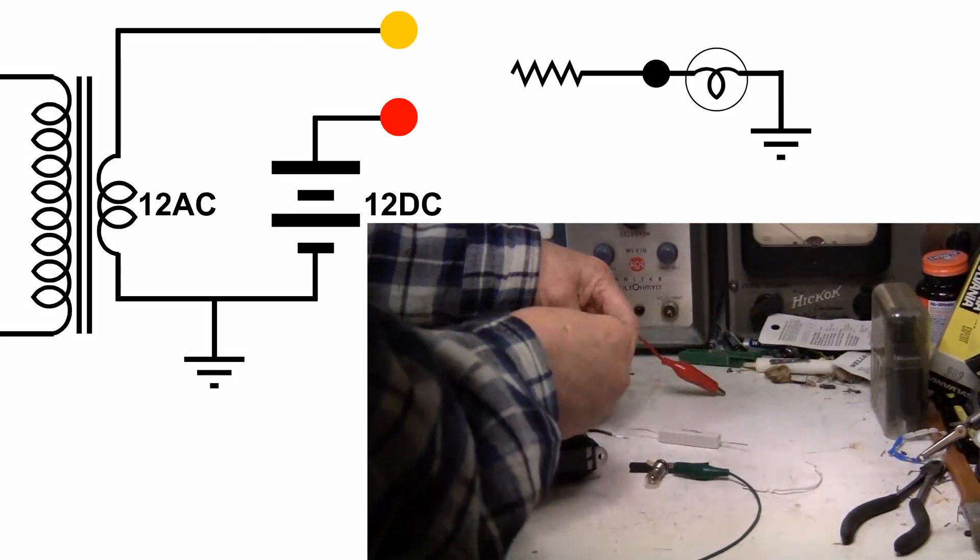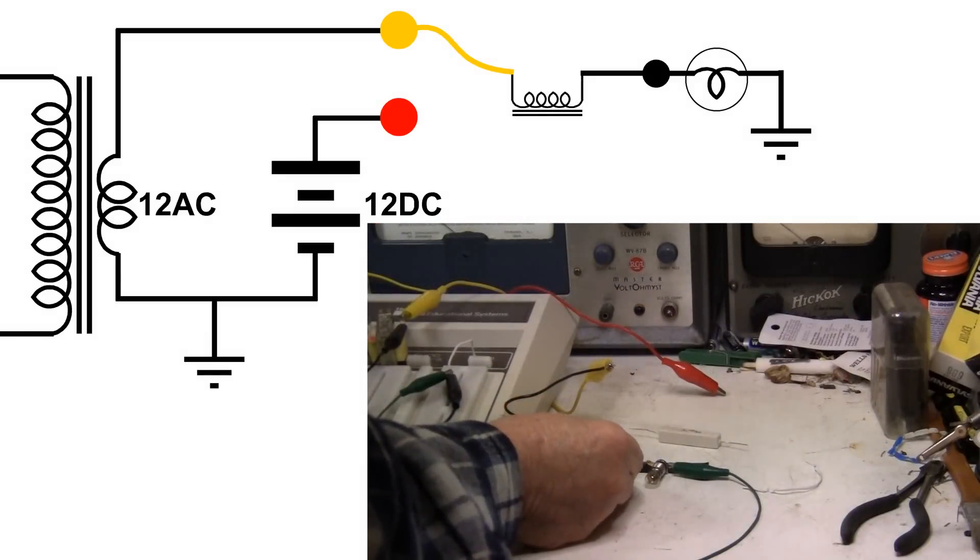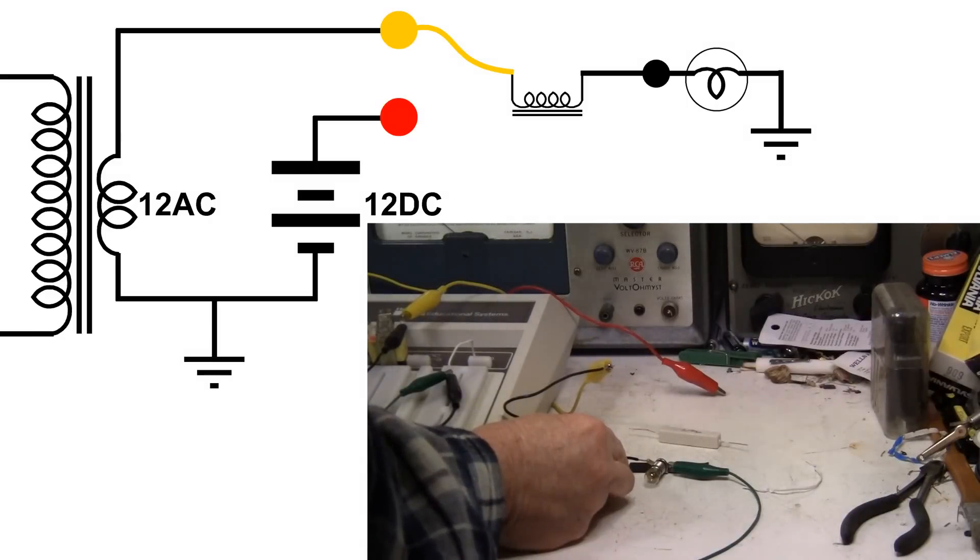And now through the coil. The impedance of that coil on AC is so high the bulb won't light at all.